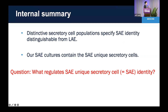As an interim summary: a distinctive secretory cell population specifies small airway epithelial identity that is distinguishable from large airway cultures, and our small airway cell cultures in vitro contain the small airway-unique secretory cells. The next question is: what actually regulates the small airway-unique secretory cell that can define small airway identity?